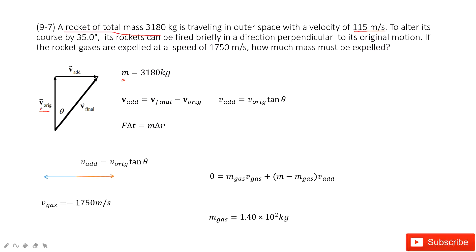And then to change its course by 35 degrees, the rocket can be fired briefly in a direction perpendicular to its original motion. So the velocity added is this one. This is the final velocity. And this is the velocity added. Because we want to make the final velocity at an angle of 35 degrees with the original velocity.